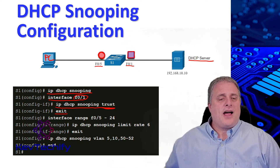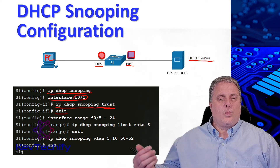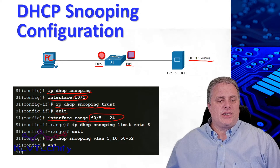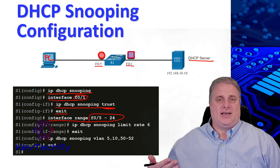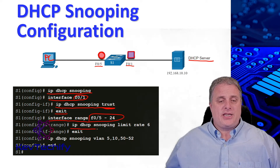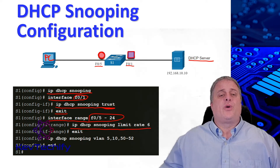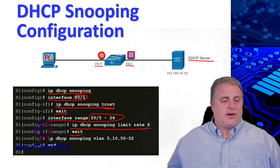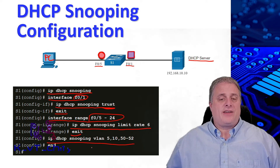Next, type exit, then configure a range of interfaces — FastEthernet 0/5 to 0/24. For ports 5 to 24, we apply rate limiting. Enter the command IP DHCP snooping limit rate 6, which limits the number of DHCP requests per second on those interfaces. Then exit all interfaces and specify that DHCP snooping is turned on for VLANs 5, 10, 50, and 252.